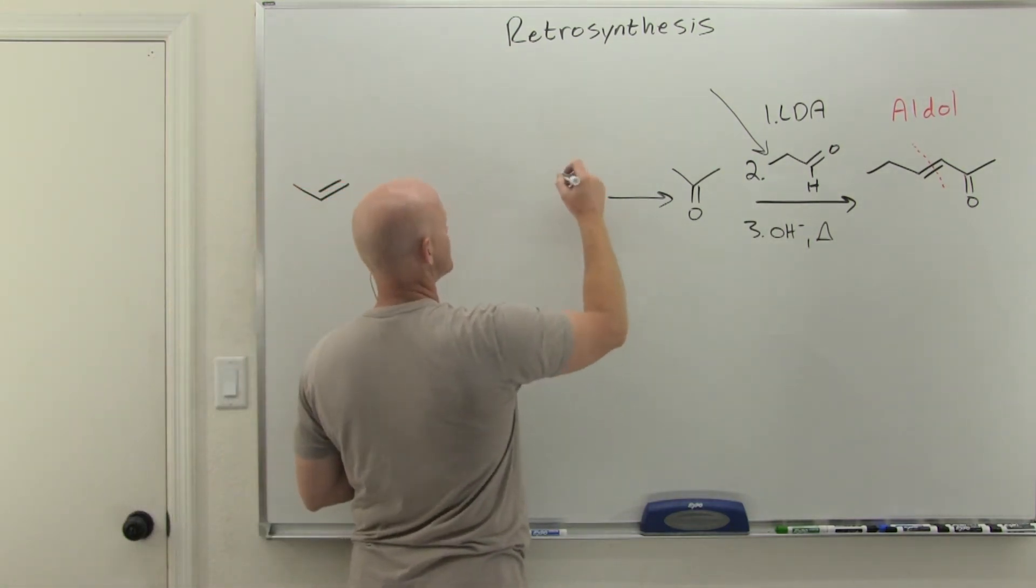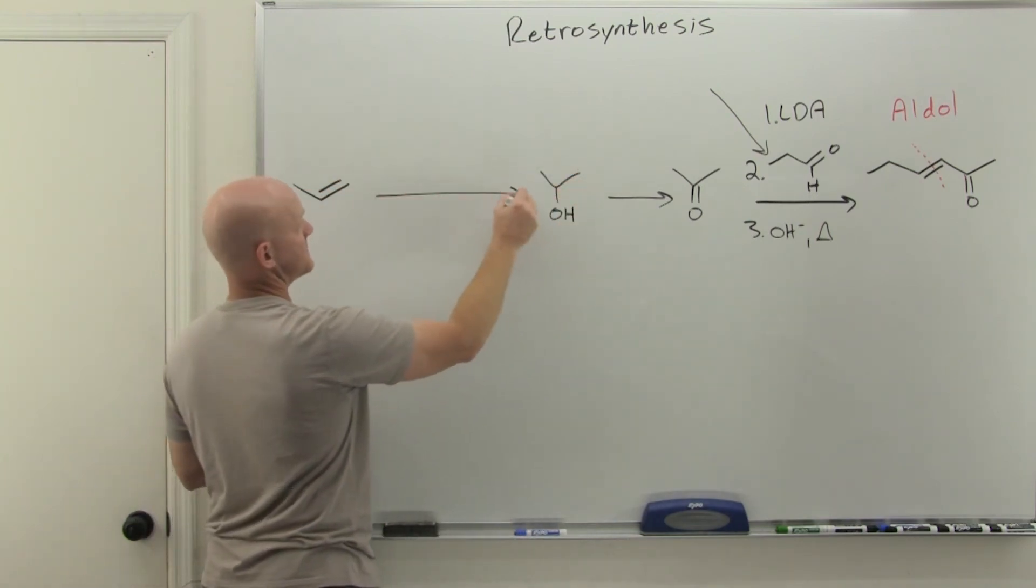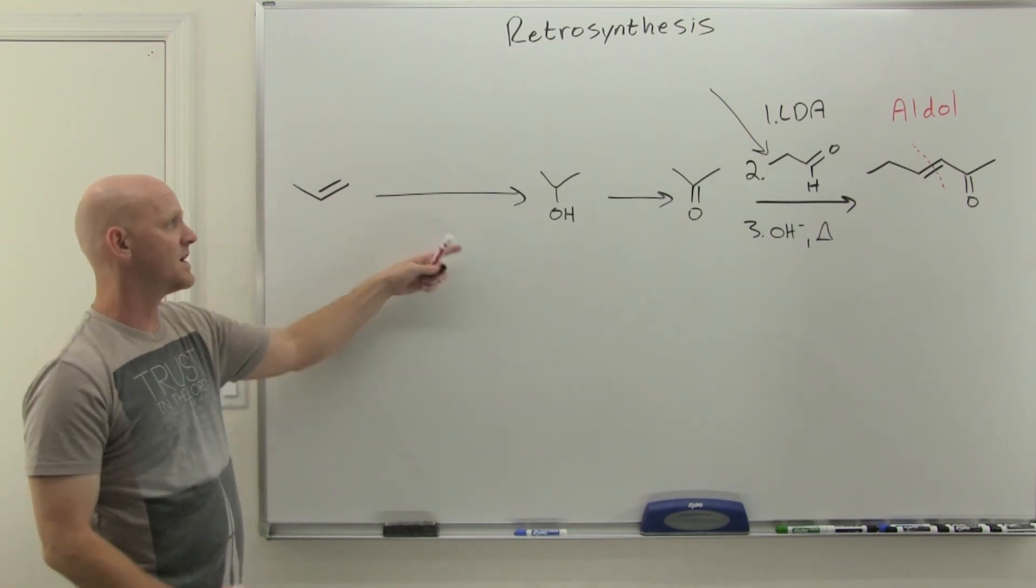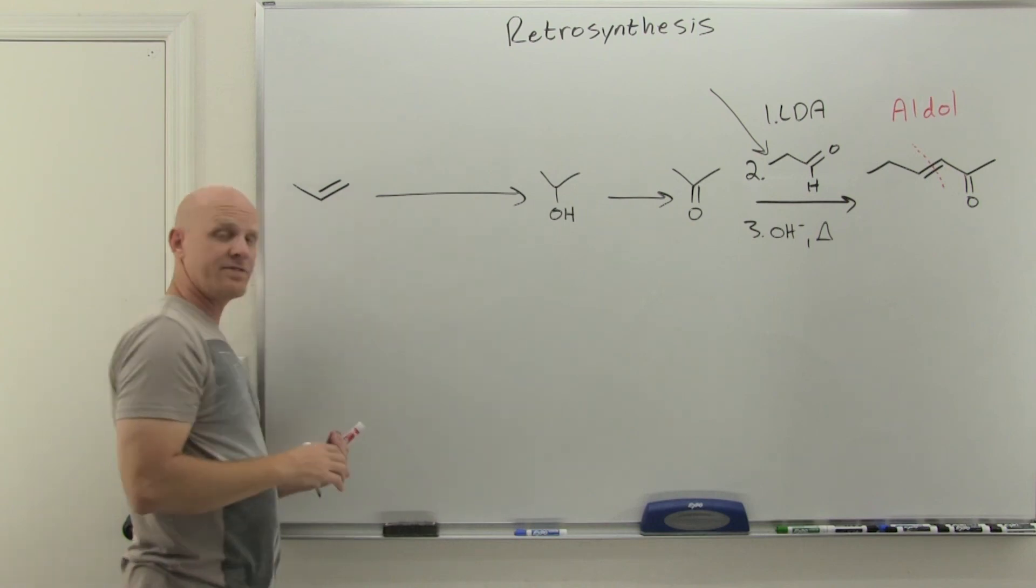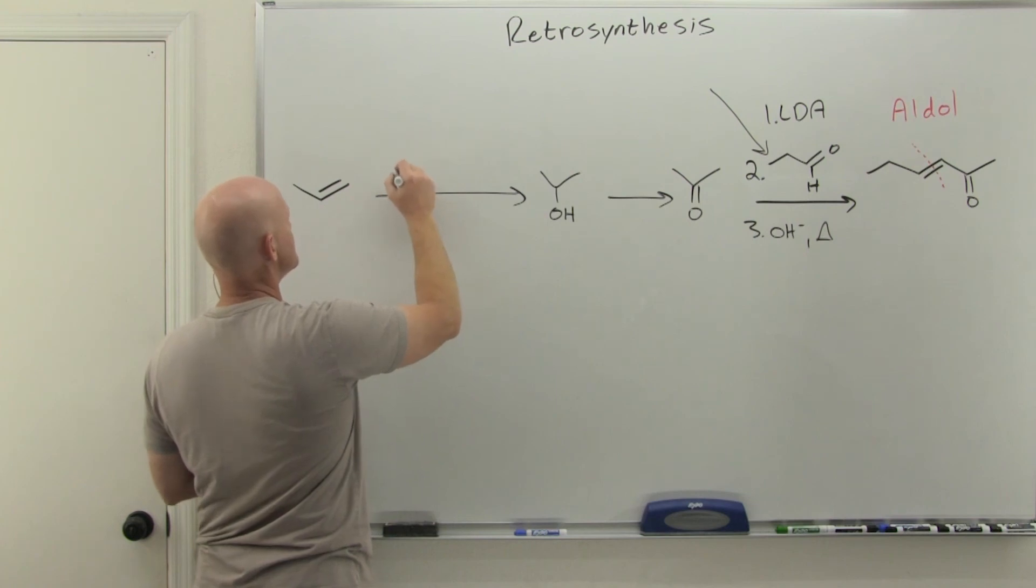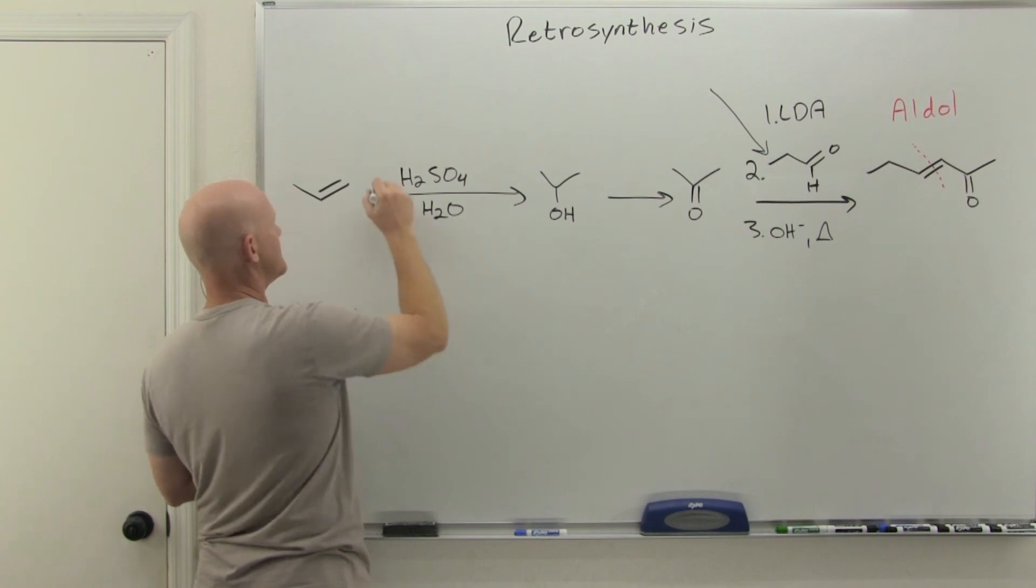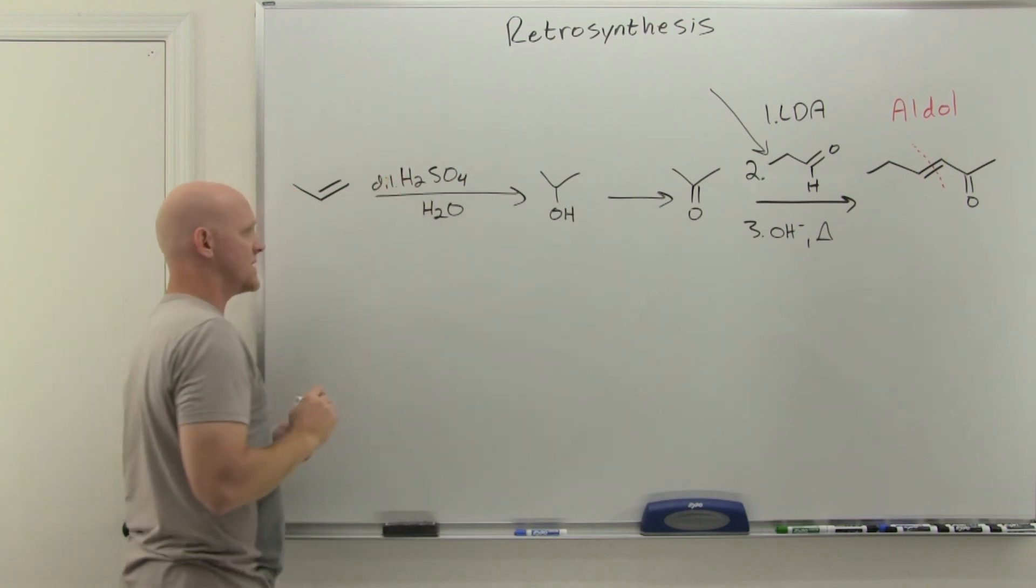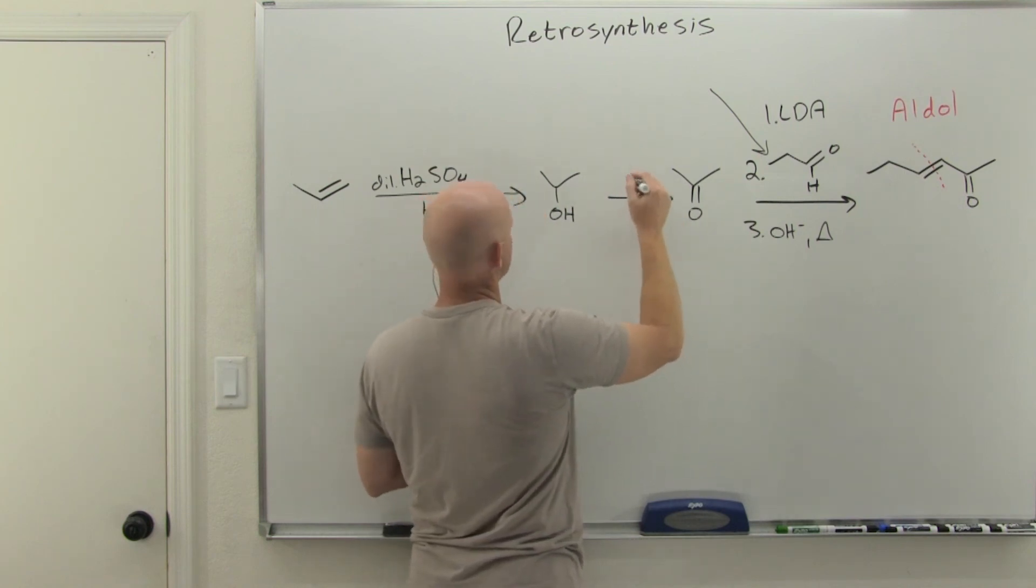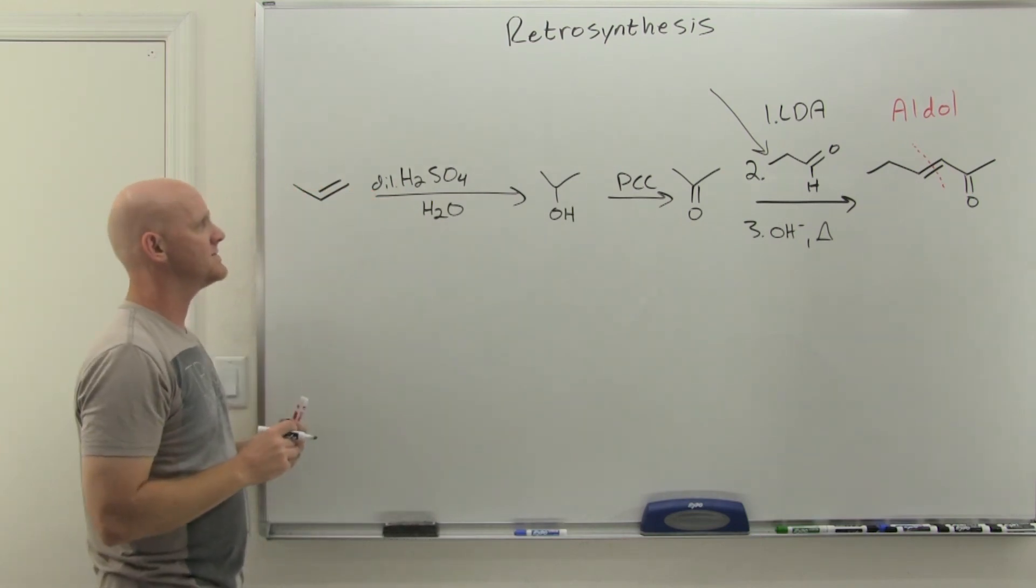How do we make a ketone? One way is from the corresponding alcohol, which is nice because I can turn an alkene into an alcohol. In this case, it would be Markovnikov, and I can pull that off with either acid-catalyzed hydration or oxymercuration-demercuration. Easier for me is acid-catalyzed hydration with dilute H2SO4. Then to oxidize the secondary alcohol to a ketone is either chromic acid or PCC. I'm short on space so I'll just write PCC.